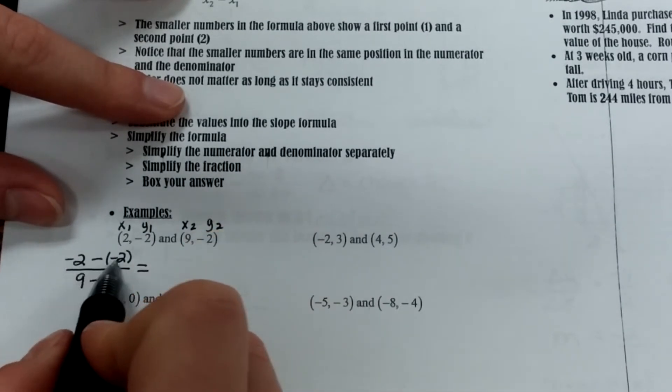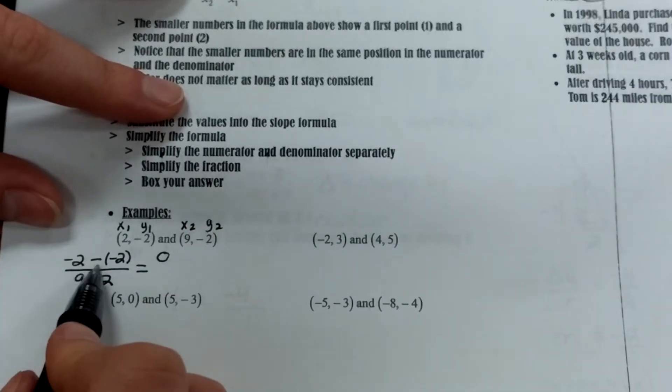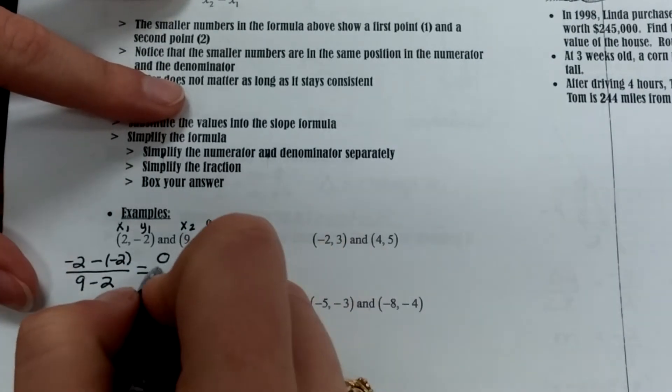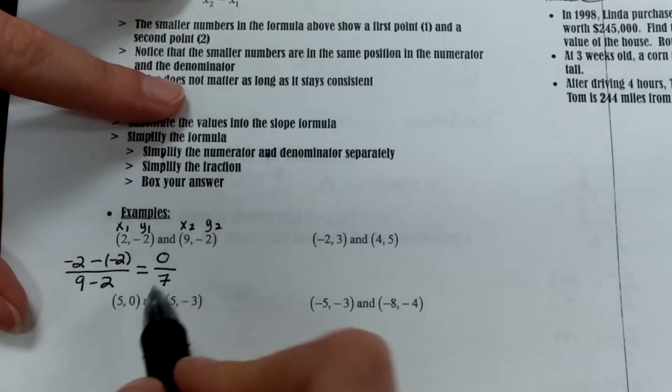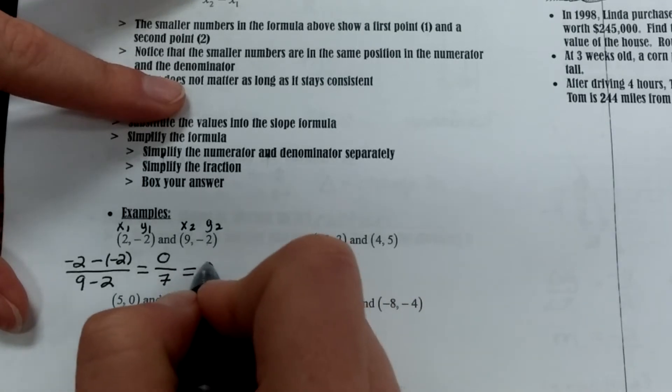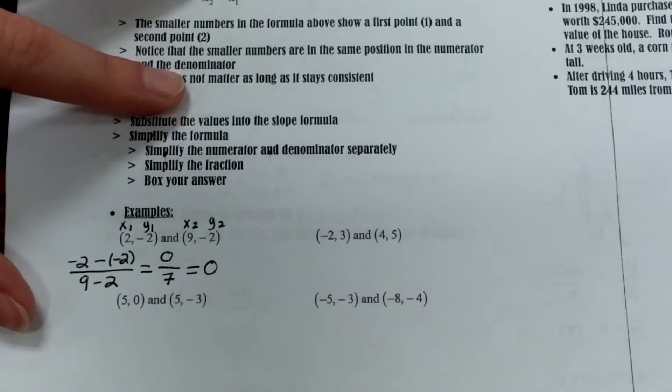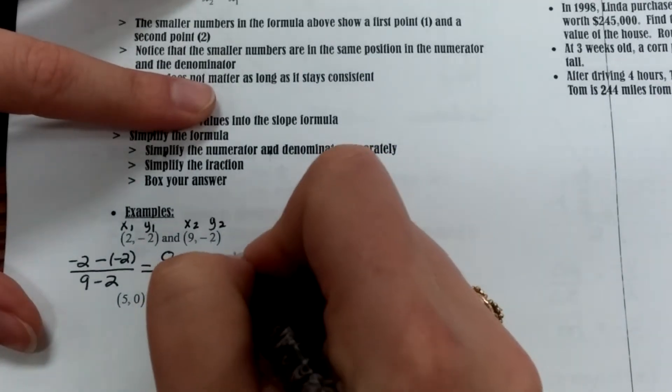So negative 2 minus negative 2 is 0. This is negative 2 plus 2, which gives me 0. And 9 minus 2 gives me 7. Anything over, or 0 over anything is 0, so the slope of this line is 0. And if you remember from our pictures, a line with a 0 slope, this would be a horizontal line.